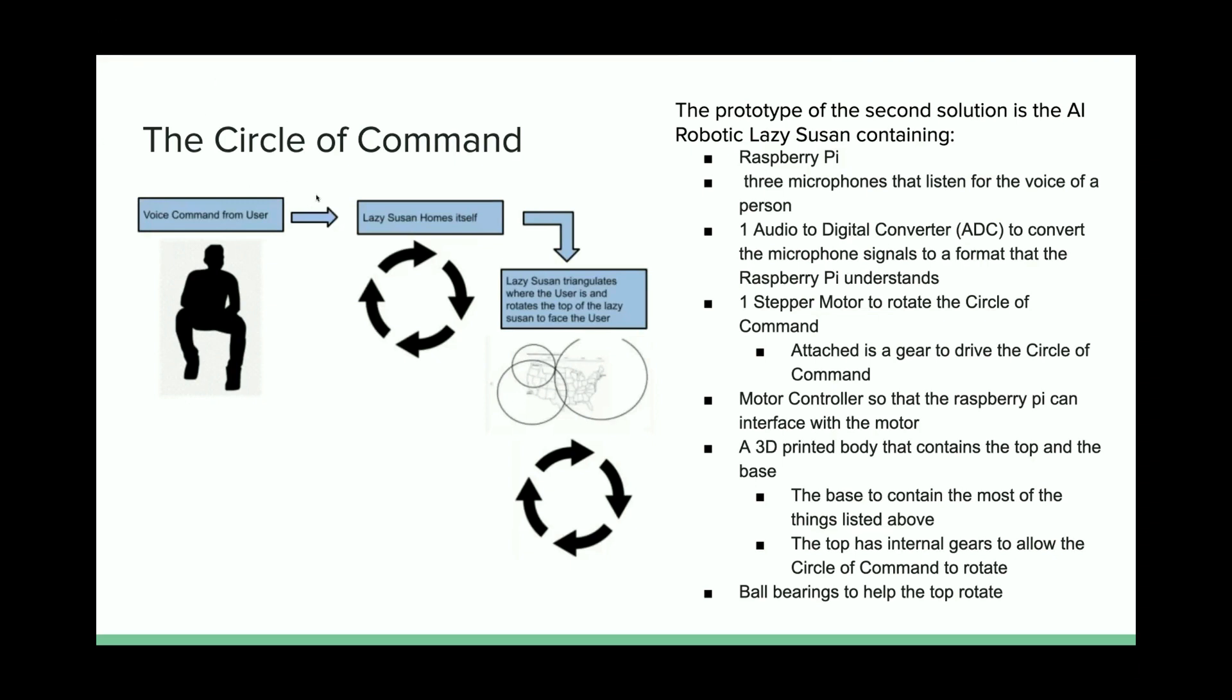The process is that the Circle of Command hears the user and orients itself towards home. Technically it'll be the fourth command of the user when it orients itself towards home. Then it triangulates where the user is, and also the top of it faces the user. This just repeats. In this case, it listens to the second command as mentioned before.